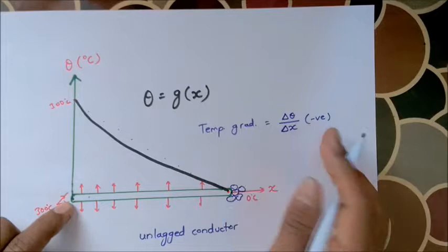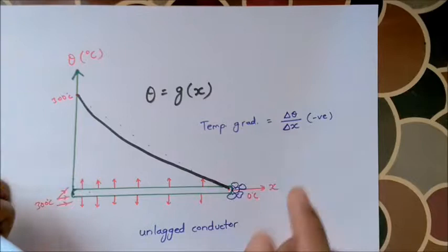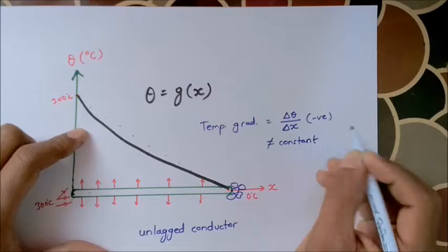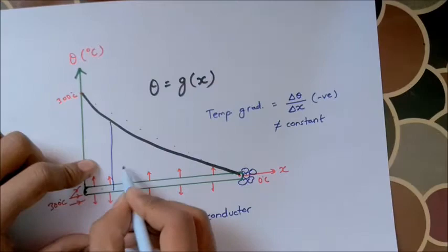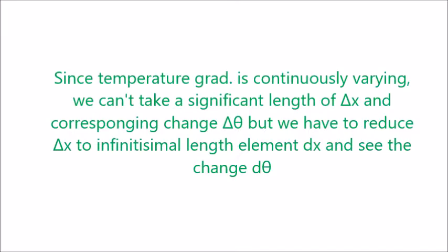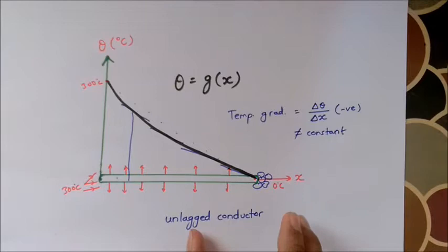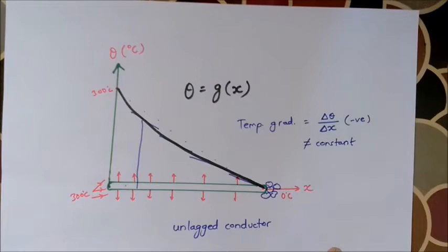The temperature gradient will also be negative. If the temperature gradient is not constant, the slope will be different at each point. If the temperature gradient is constant, the slope is the same throughout. In the next video, we will plot the function graph and discuss the types of functions, limits, and derivatives. Thank you.